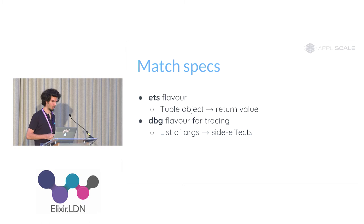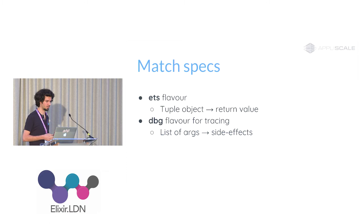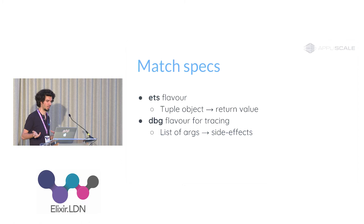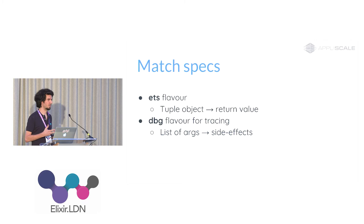Match specs are used in two places in the Erlang VM: one is for ETS tables, and one is for tracing — with slightly different flavors. The ETS flavor receives a tuple (one row in an ETS table), whereas the DBG flavor receives the list of arguments the function was called with. In the ETS flavor, the return value is the result of the selection, while in tracing the return value is ignored — it's only executed for side effects to modify tracing behavior. The body is very limited; you cannot do normal function calls, conditions like if or case, or matching. Most of it is term construction and guard-like expressions.